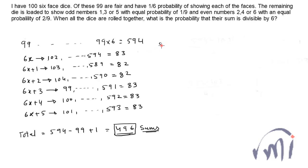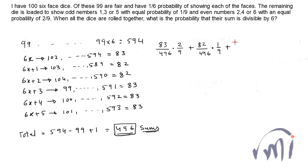The probability of getting a sum in the form of 6x from the 99 fair dice is 83/496. For the total sum to be divisible by 6, the 100th (loaded) die should show 6, and the probability of that is 2/9. Or the 99-dice sum can be in the form of 6x+1 with probability 82/496, in which case the last die should show 5 — with probability 1/9. Or the sum can be in the form of 6x+2 with probability 82/496, and the last die must show 4 — with probability 2/9.